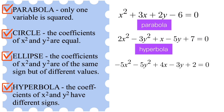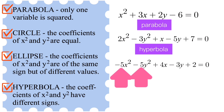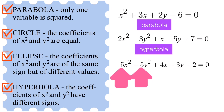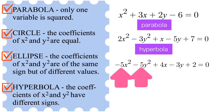In this third example we can see that both the coefficients of the squared variables — x² and y² — are negative 5. Since these two values are the same or equal, this is an example of a circle.